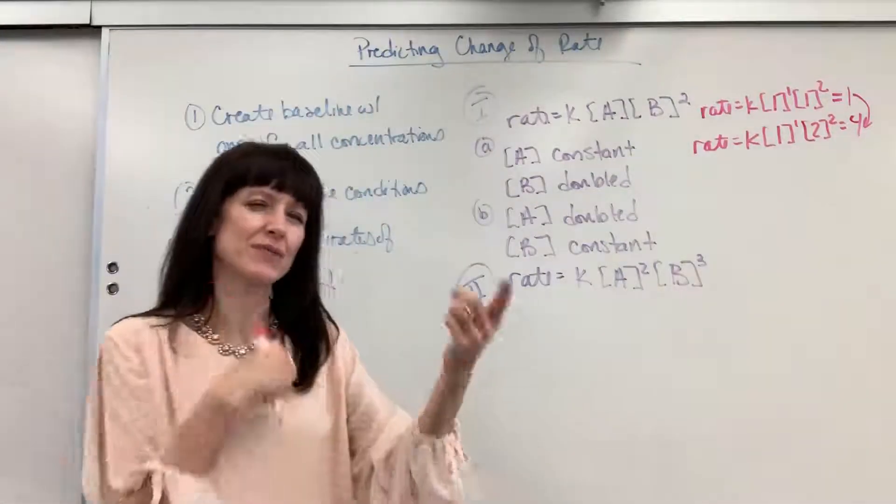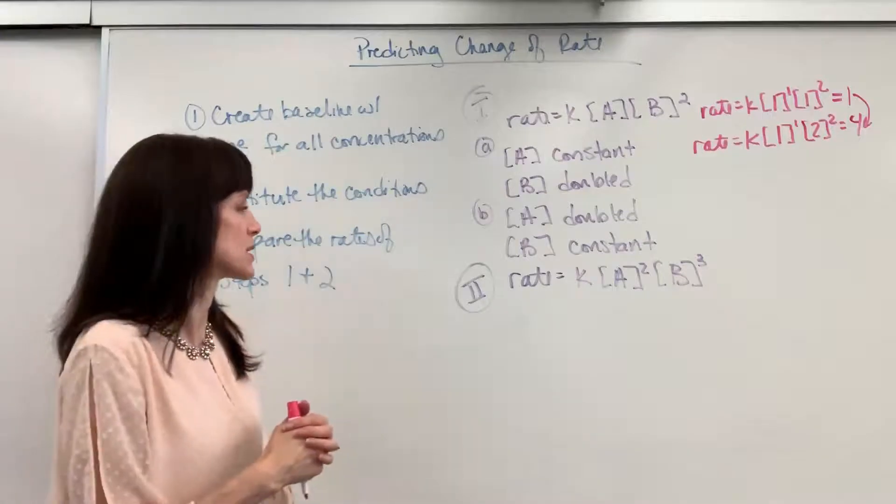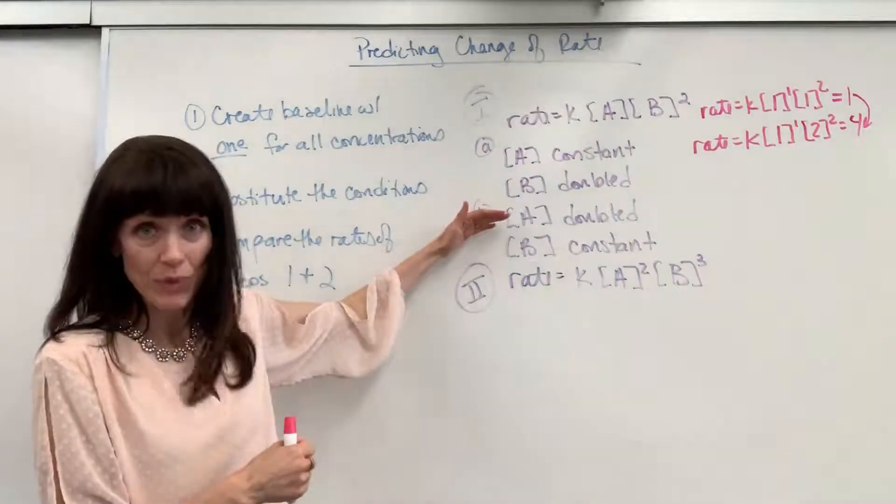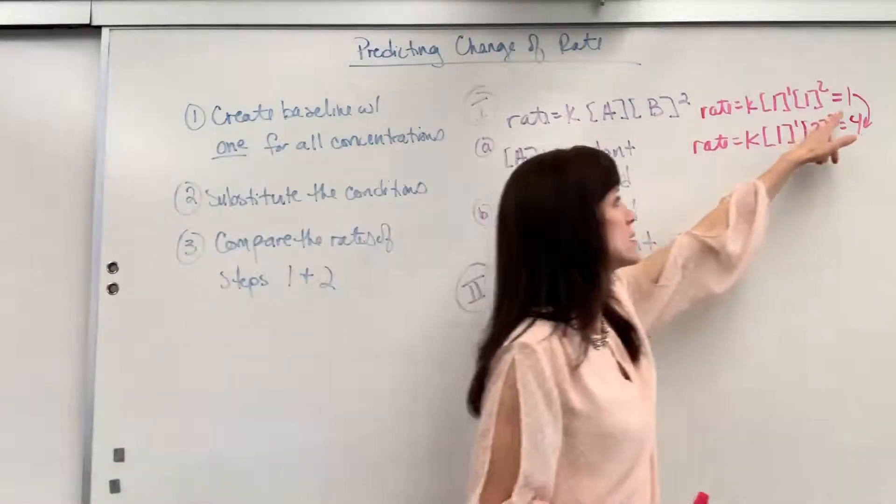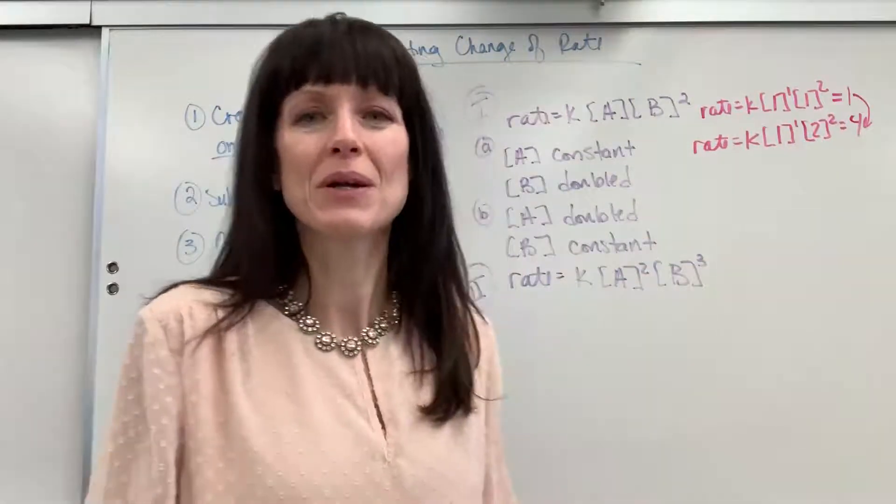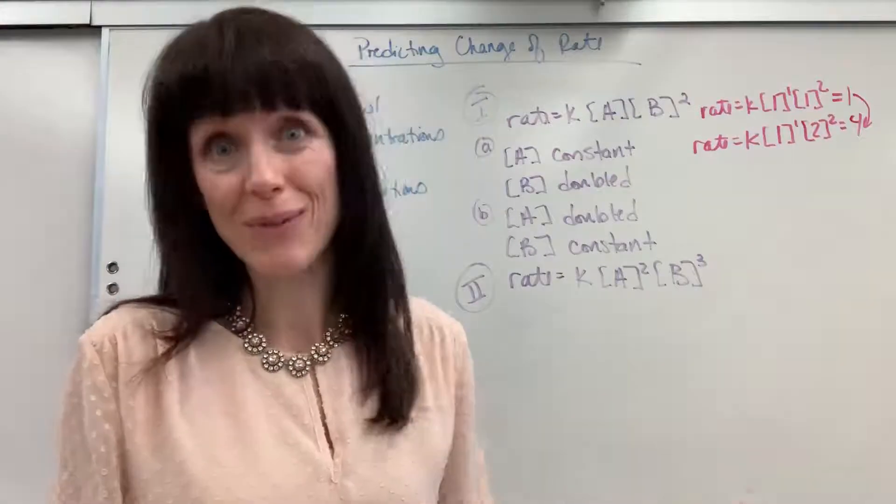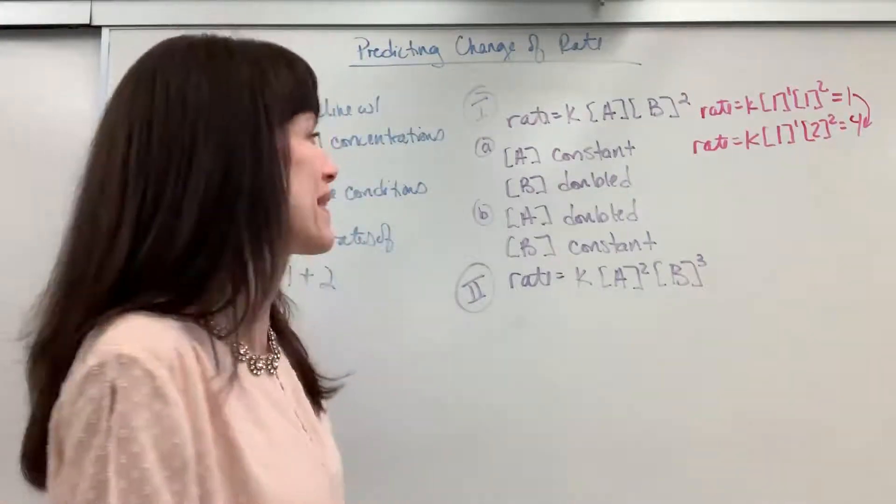Okay, let's do it again. This time we're going to flip-flop. We're going to change the conditions. Now A is doubled and B is held constant. So we know that the rate is going to be 1, and we rig it that way. By putting 1 in for every concentration, the rate will always be 1. It makes it really easy to compare.